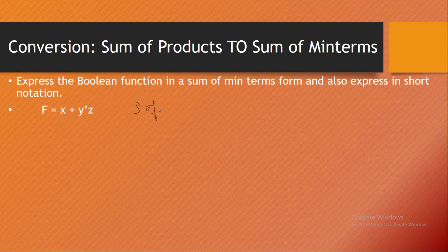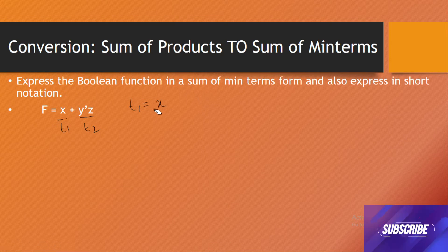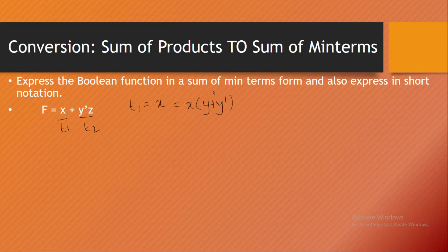Let's try to solve this problem: f is equal to x plus y-dash z, which is in sum of products, and we need to convert it into sum of minterms. Let me term the first one as T1 and the second term as T2. T1 is x, and we want to express this in the form of all three variables. So I have x here — this can be replaced by x into (y plus y-dash), which is nothing else but one, so there is no change in value.